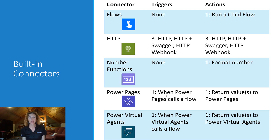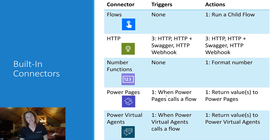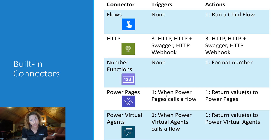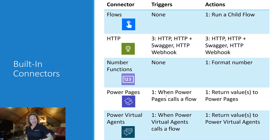With Power Pages, there is one trigger and one action. The trigger is when Power Pages calls a flow, and then you can use it as an action to return a value to a Power Page. This extends what you can do within Power Pages simply by having this one very powerful action and this one very powerful trigger. Likewise, you have Power Virtual Agents — also one trigger and one action. The trigger allows you to kick off an automation when a Power Virtual Agent calls a flow, and alternatively you can use this as an action to return a value from another flow to a Power Virtual Agent.